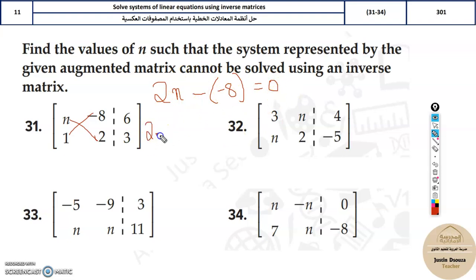It'll be 2n plus 8 equals 0, so 2n equals negative 8, and n equals negative 4. This is the answer for problem 31. This is how we solve it, and all problems use the same method.